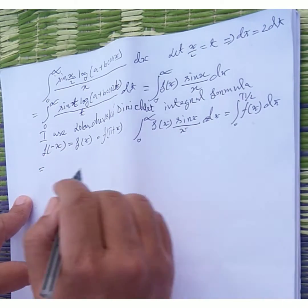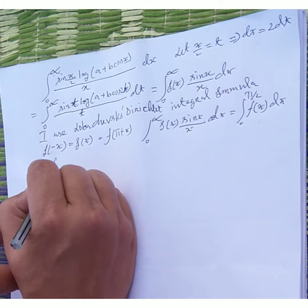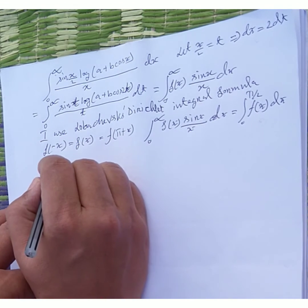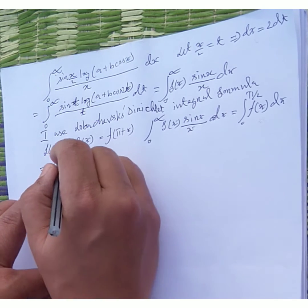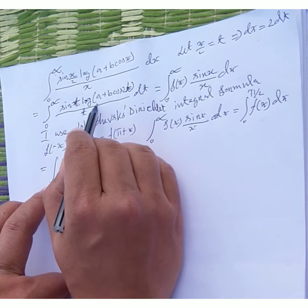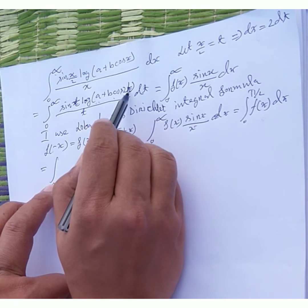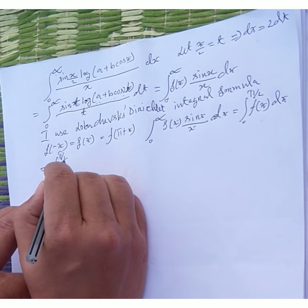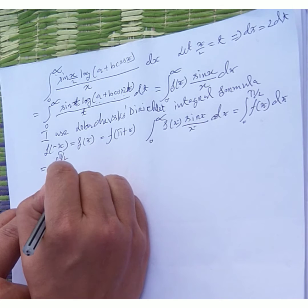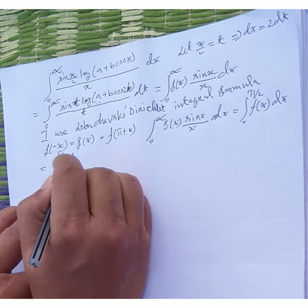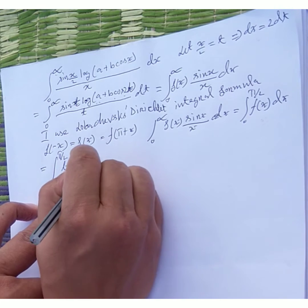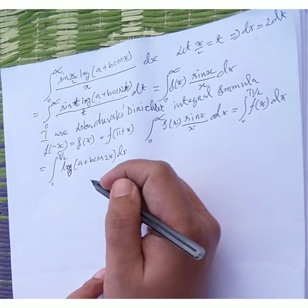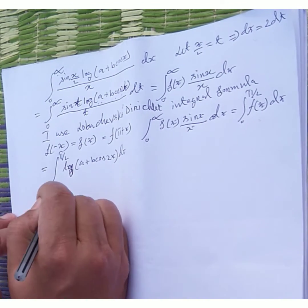So applying this formula: f(x) here is log(a + b·cos 2t). Therefore I can write the integral as the integral from 0 to π/2 of log(a + b·cos 2x) dx.